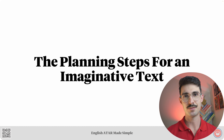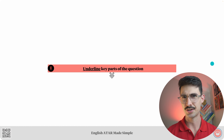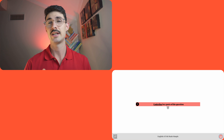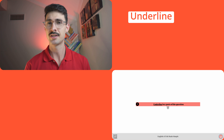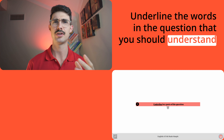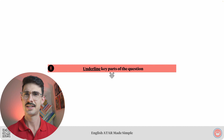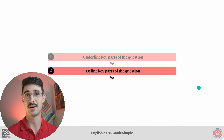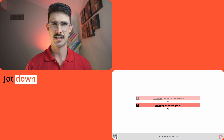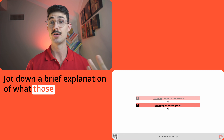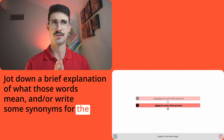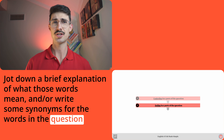We're starting off with familiar territory with step number one: underline key parts of the question. Here you should underline the words in the question that you need to understand and address. Still in familiar territory with step number two: define key parts of the question. This is where you jot down a brief explanation of what those words mean and/or write some synonyms for words in the question you're not sure of.